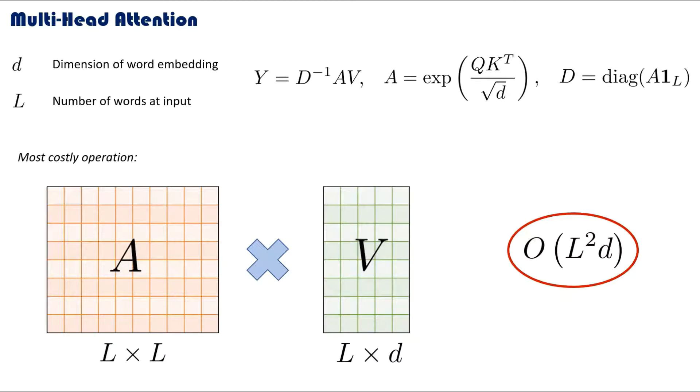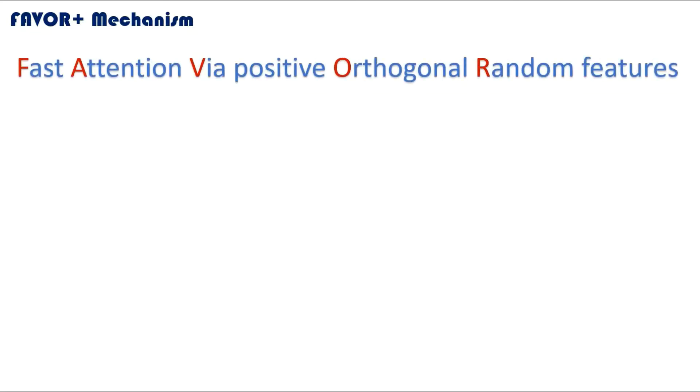This is pretty bad because if we want to handle long sequences of words, our attention mechanism will take quadratically longer in time. This is why the Performer is introduced. As we have mentioned, the Performer uses the FAVOR+ mechanism in place of the traditional attention mechanism. Just for completeness, FAVOR stands for Fast Attention Via positive Orthogonal Random features.